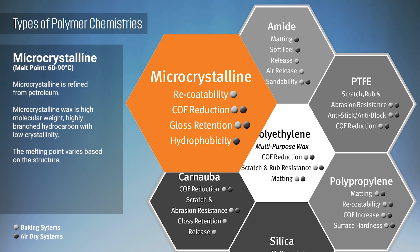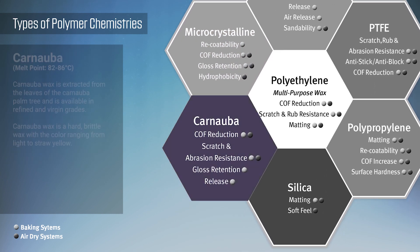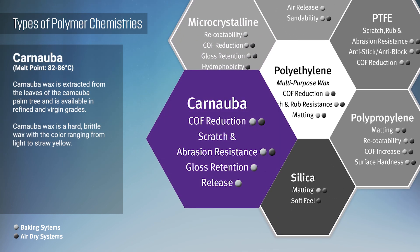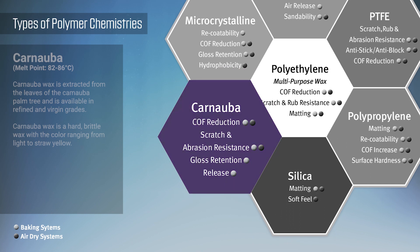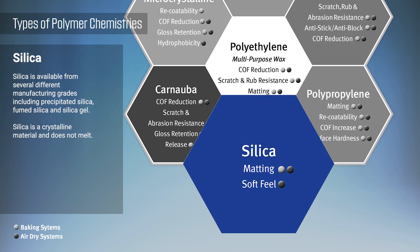Microcrystalline waxes are commonly used to achieve a variety of benefits including gloss control, rub resistance, slip control, and lubrication during metal forming. Carnauba wax is a naturally occurring hard polymer that yields release properties and mobility while maintaining high gloss in baking enamels. Silica is an inorganic material used to achieve specific matting effects in coatings and inks.